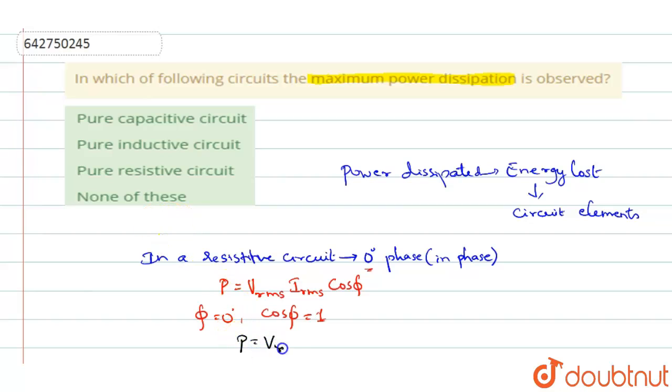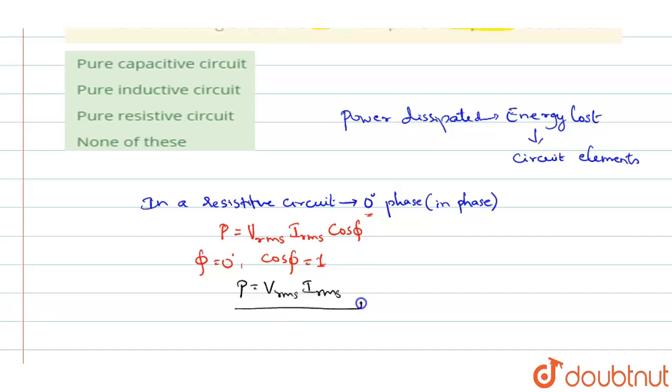P will become V_rms times I_rms. So this will be the maximum power dissipated. This is the maximum value power can have in this equation. So you can say that in a purely resistive circuit, since they are in phase, the power dissipation will be maximum.